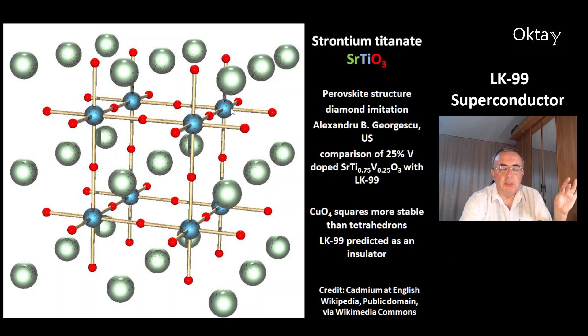The titanium ions are blue. The oxide ions are red. This is the perovskite structure. This substance is used as a diamond imitation. There is another work from Aleksandru Giorgescu from USA.